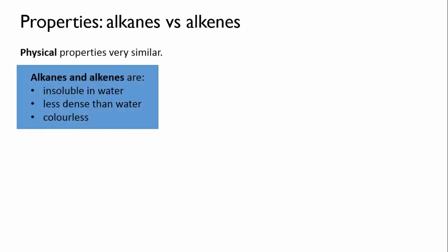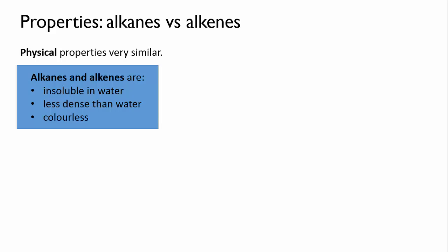Let's look at how alkanes and alkenes compare in terms of properties. For their physical properties, they're pretty similar. Both are insoluble in water, both are less dense than water, and both are colorless. However, their chemical properties are quite distinct. They have in common that they're both good fuels. They combust in air to give carbon dioxide and water. However, there the similarities end. Alkanes are generally unreactive, which has to do with the fact that the carbon-carbon and carbon-hydrogen bonds are quite stable.